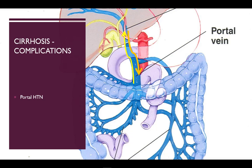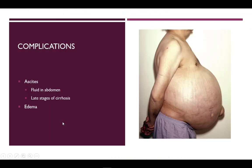The vein cannot handle the extra volume so it will back up into the smaller vessels in the GI system. Additionally, fluid seeps into the abdominal cavity and other areas of the body, resulting in ascites and edema. In the end stages, fluid buildup can be quite severe, incredibly uncomfortable, and very dangerous.